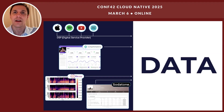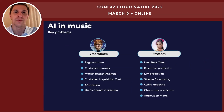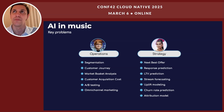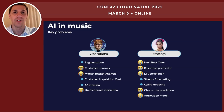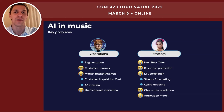Now that we understand the data landscape, let's see how AI helps solve real business problems. AI is solving two key types of problems in the music industry across two different layers. The first is operations — optimizing marketing and engagement through segmentation, A/B testing, and omni-channel marketing. The second is strategy — driving business decisions such as stream forecasting, churn prediction, LTV modeling, and uplift modeling. A key challenge is that each streaming service — Spotify, Apple Music, YouTube — keeps its own data, and we can't track a listener across platforms, which limits how well we understand individual behavior. That's why uplift modeling and stream forecasting are key focus areas.